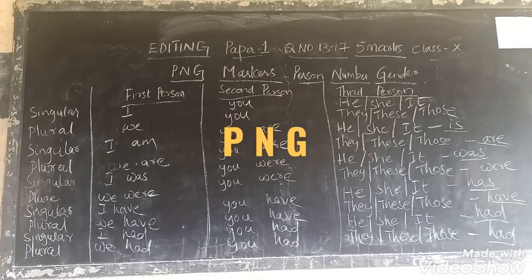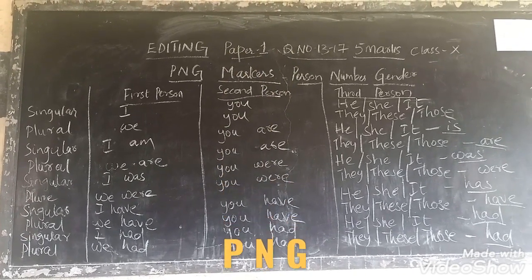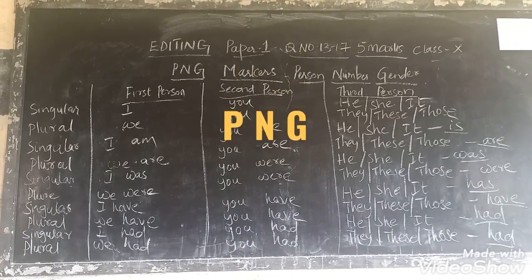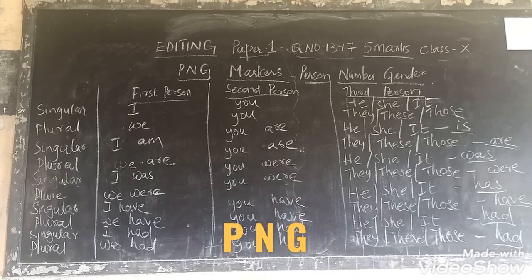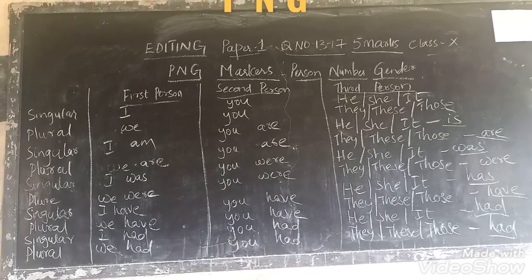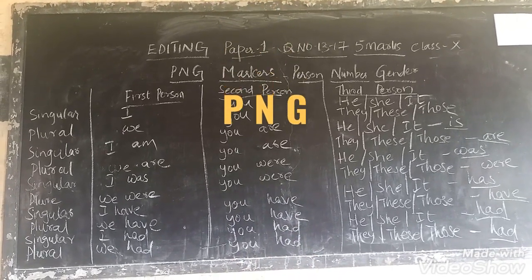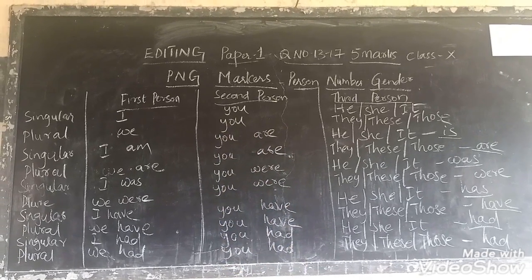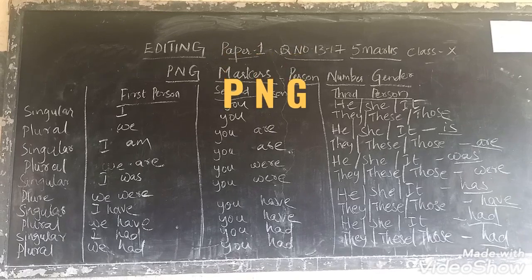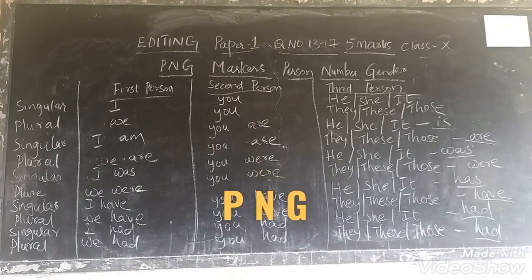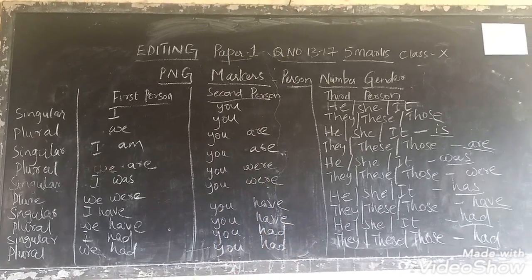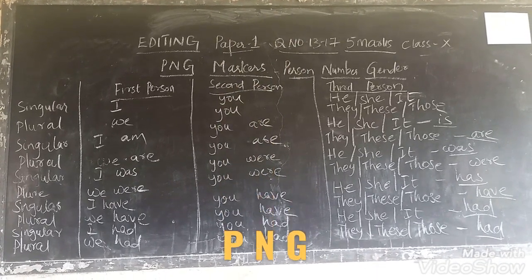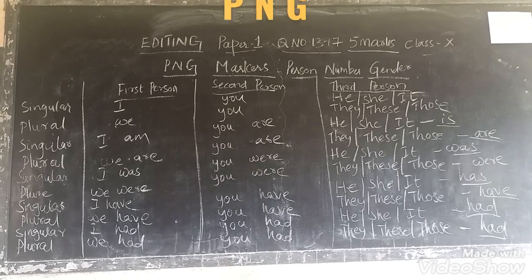For third person: for he, she and it, the helping verb used in present tense is 'is'. And for the plural form of third person — they, these and those — the helping verb used is 'are'. Now, in the past tense: for 'I' it is 'was', for 'we' it is 'were'. For second person, it is 'you were' in both cases.